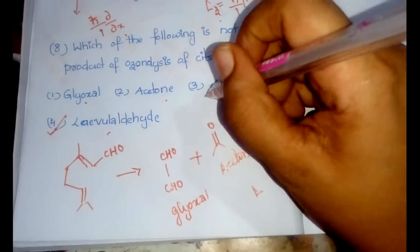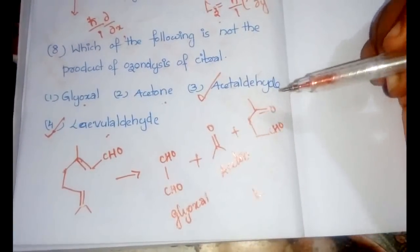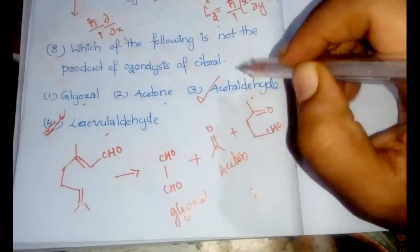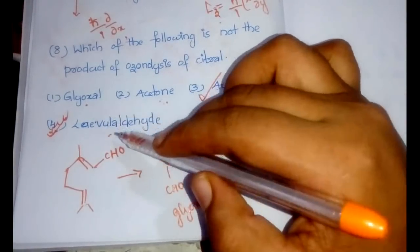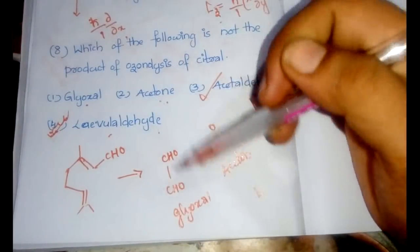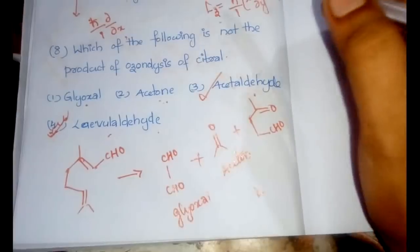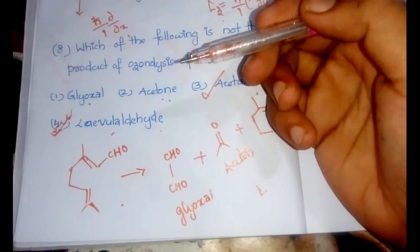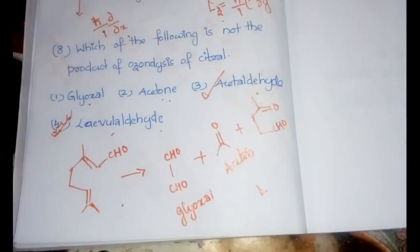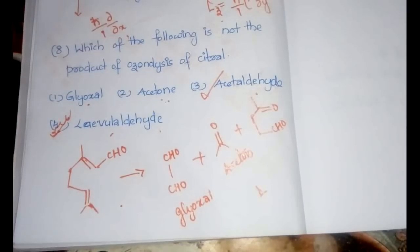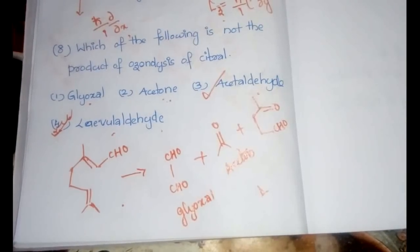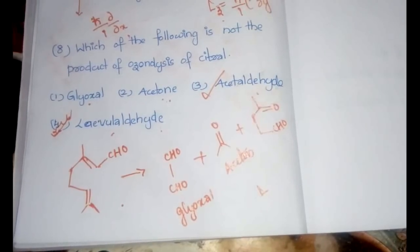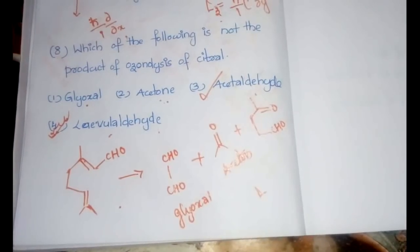The product NOT formed during ozonolysis of citral is acetaldehyde (option 3), since only glyoxal, acetone, and levaldehyde are produced. Memorize the structure of citral because BHU prefers questions from biomolecules frequently — knowing the structure helps you identify correct and incorrect products quickly.